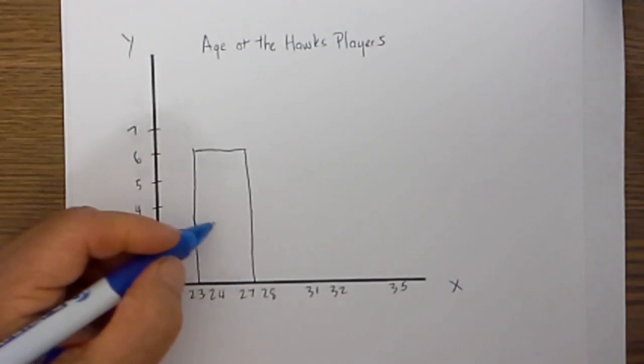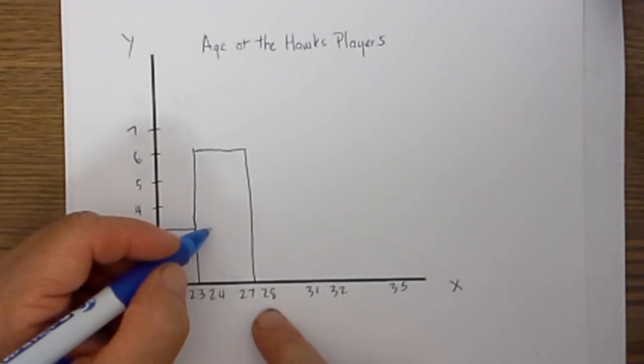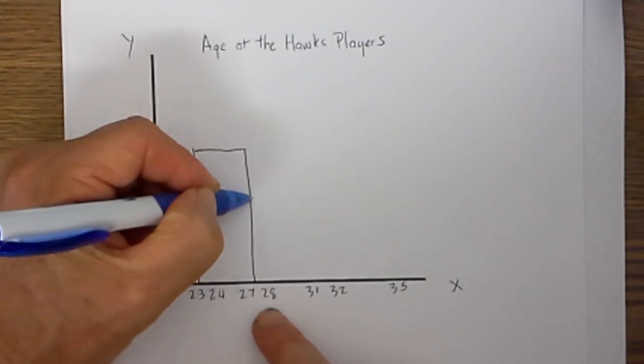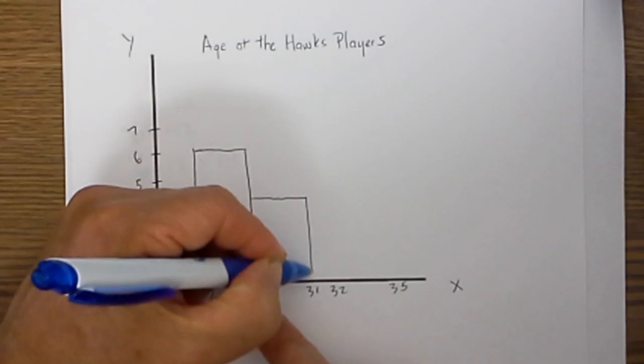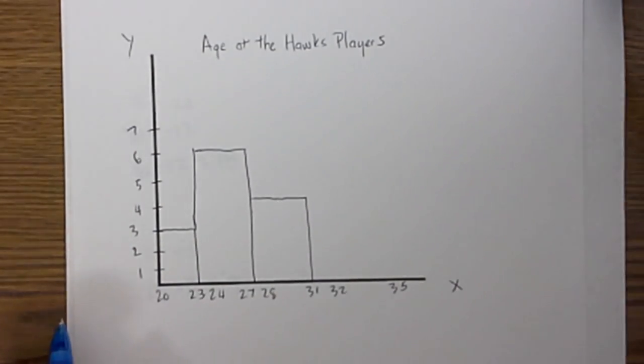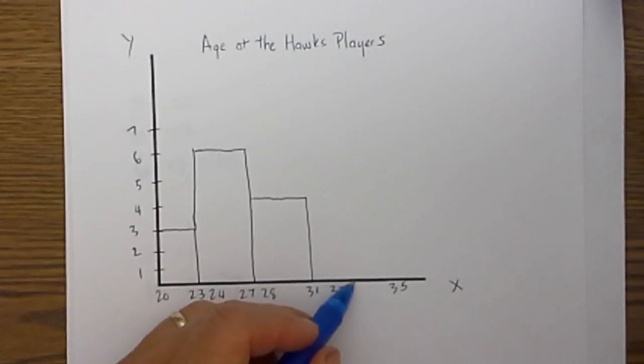And then the next one we have 28 through 31, and I have 4, so I am going to put a mark there, and then I am going to draw the interval. And finally 32 through 35 will be 3, so I will go 3. So notice the bars are touching.